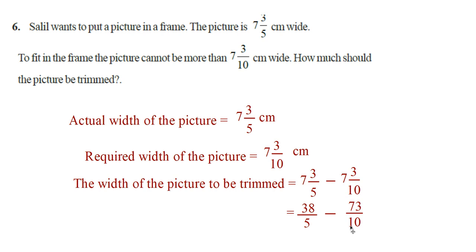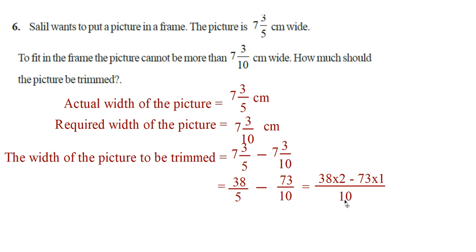Take 10 as the common denominator. 5 goes 2 times in 10, so 38 × 2, minus 73 × 1, all divided by 10. That gives 76 − 73 by 10, which is 3/10 centimeter. So 3/10 centimeter width of the picture should be trimmed.